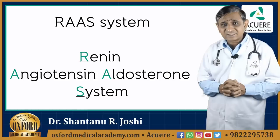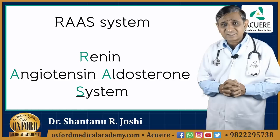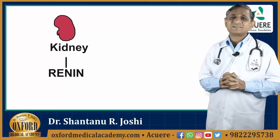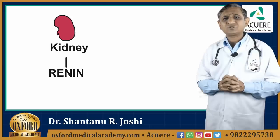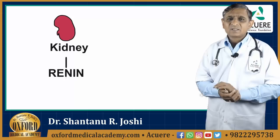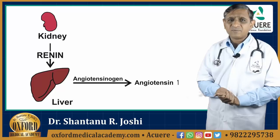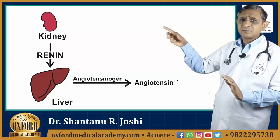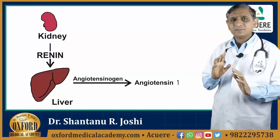The Renin-Angiotensin-Aldosterone system. It starts with reduced blood supply to the kidney. Whenever there is reduced blood supply to the kidney — what we call an ischemic kidney — the kidney secretes a substance known as renin.